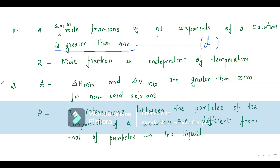Assertion: ΔH and ΔV are greater than 0 for non-ideal solutions. This looks like a false statement because ΔH and ΔV of mixing can also be less than 0 for non-ideal solutions. Reason: the interactions between particles of the components are different from that of particles in the pure liquid — this is a correct statement. So the answer is again D: assertion is false, but reason is correct.